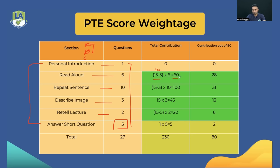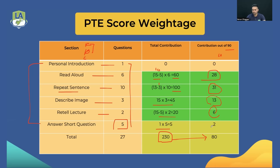For Repeat Sentence, you get five points in fluency, five in pronunciation, and three in content — the three content points go into listening. Describe Image everything goes into speaking. Re-tell Lecture fluency and pronunciation go into speaking. Answer Short Question is one point per question. The total speaking module adds up to 230 raw points, which converts out of 80. The estimated contributions are: Read Aloud 28 points, Repeat Sentence 31 points, Describe Image 12–13 points, Re-tell Lecture 6–7 points, Answer Short Question 2–3 points.